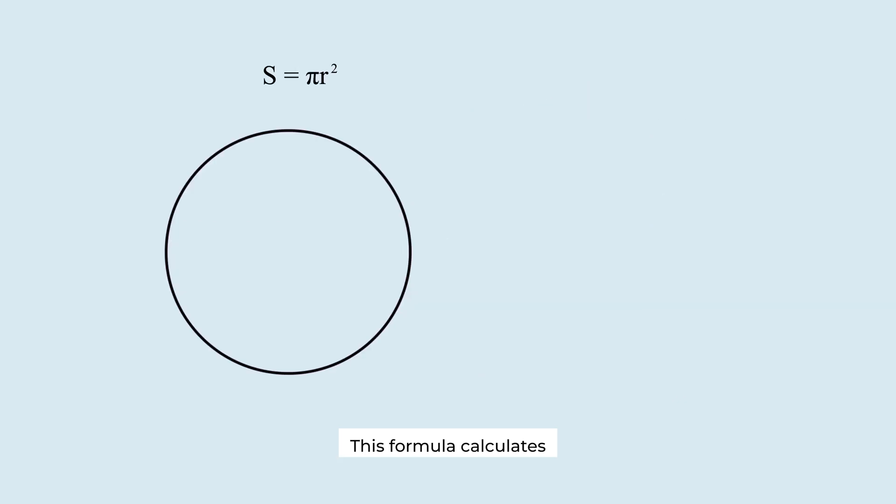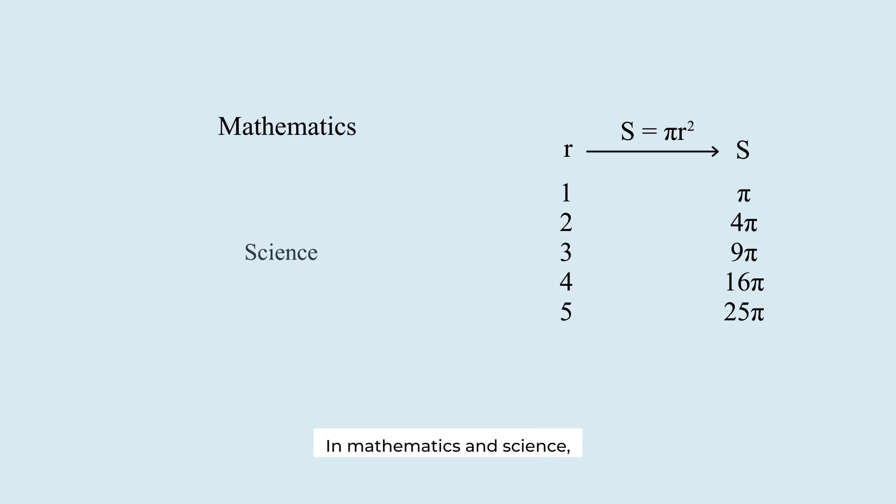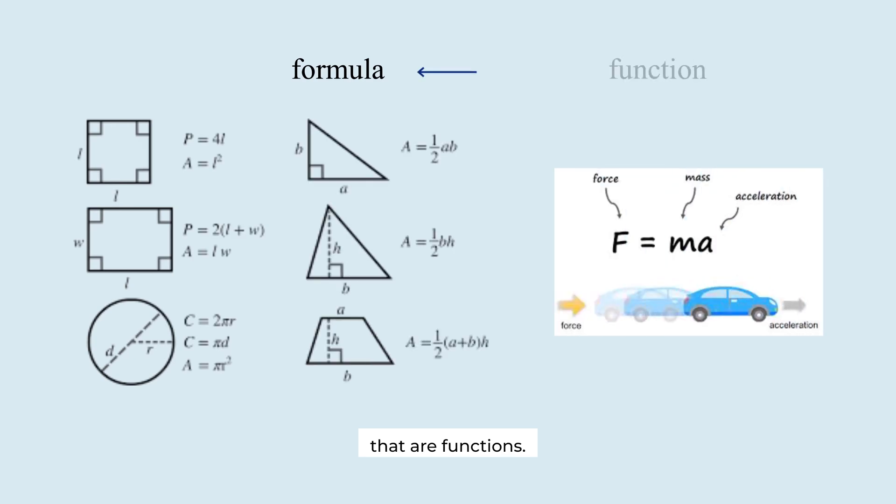This formula calculates the area s of a circle with radius r. As r changes, so does s, following the rule pi r squared. That makes this equation a function as well. In mathematics and science, there are many formulas that are functions.